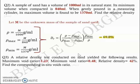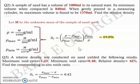Next question: a relative density test conducted on sand yielded the following results. Maximum void ratio e_max is 1.23, minimum void ratio e_min is 0.48, and relative density Dr is 42%. We are asked to find the corresponding in-situ void ratio e. We will use the equation for Dr in terms of void ratio: (e_max − e) / (e_max − e_min) = Dr, the value of which is already given as 0.42.